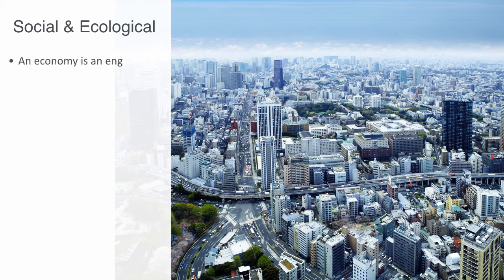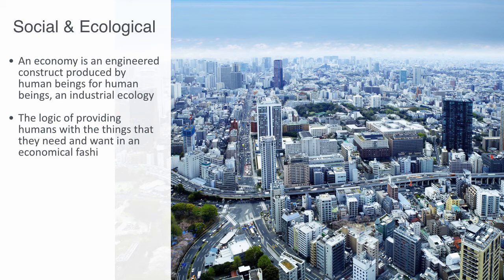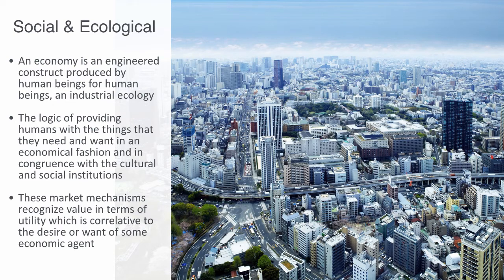An economy is an engineered construct produced by human beings for human beings. This industrial ecology has also evolved over a long period according to the logic of providing humans with the things that they need and want in an economic fashion, and in congruence with a set of cultural and social institutions of those societies. Today on the macro level this is done primarily through the vast supply chain network of our global economy, regulated by public policy and increasingly market mechanisms. These market mechanisms recognize value in terms of utility, which can be correlated to the desire or want of some economic agent, with regulatory feedback loops structured around industrial supply and demand.